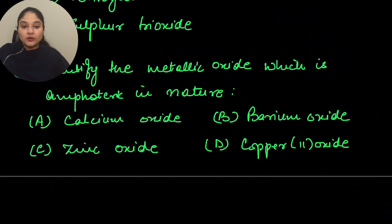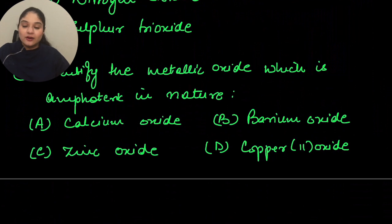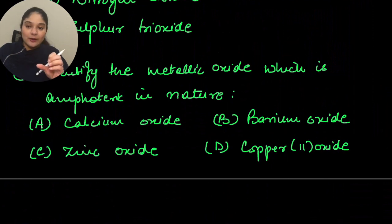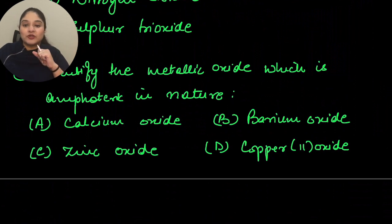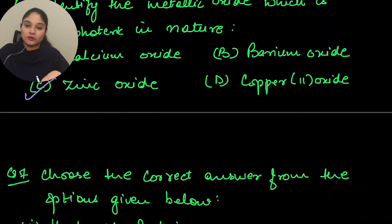Identify the metallic oxide which is amphoteric in nature. Amphoteric means an oxide that can behave like an acid when reacting with a base, and like a base when reacting with an acid — in both cases it gives salt plus water. Compounds with this tendency are called amphoteric oxides. Common examples are zinc oxide and aluminum oxide.